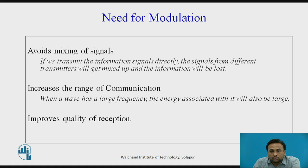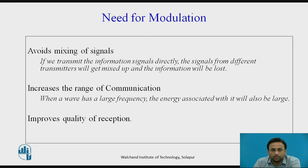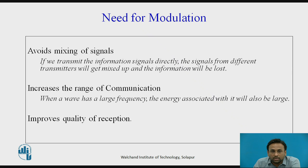The second reason is to avoid mixing of signals. If we transmit the information signal directly, signals from different transmitters may share the same frequency and get mixed up, causing information loss. Assigning different carrier frequencies avoids this mixing. Third, modulation increases the range of communication — a higher frequency wave carries more energy and can travel longer distances. Fourth, it improves the quality of reception; for example, FM provides greater noise immunity. These are the key reasons we need modulation: reduce antenna height, avoid signal mixing, increase range, and improve reception quality.